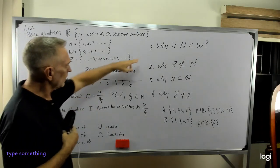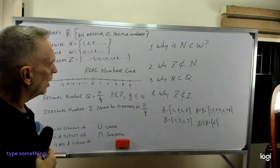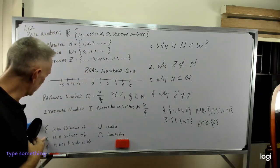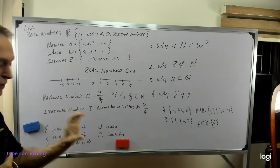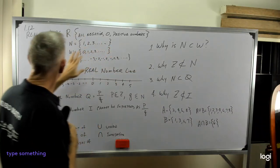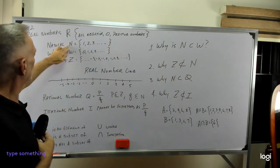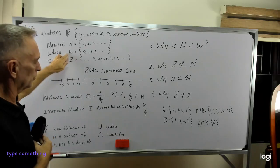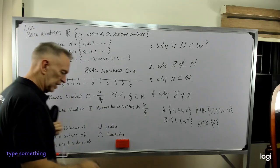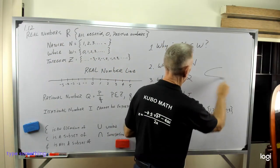So here's some questions I've laid out here. Why is N a subset, and I should say this little C looking item means is a subset of. Why is the natural numbers a subset of whole numbers? So if you think about, let me grab a pen here, if you think about a bucket,